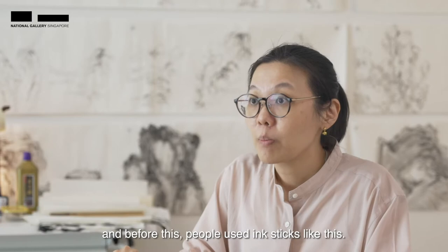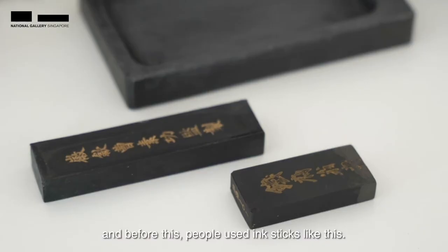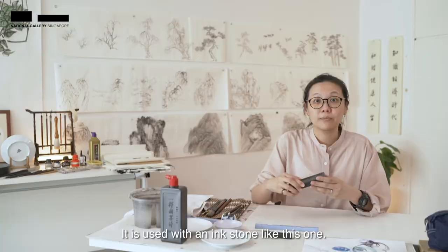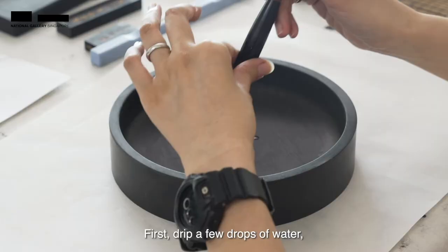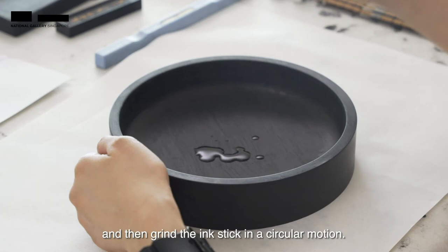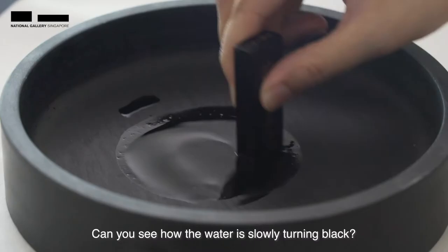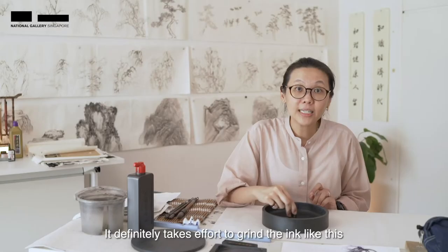Liquid ink was invented in the 1880s and before this, people used ink sticks like this. It is used with an ink stone like this one. First, drip a few drops of water and then grind the ink stick in a circular motion. Can you see how the water is slowly turning black? This is ink!